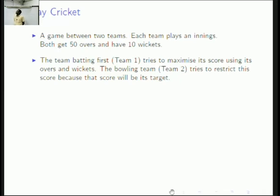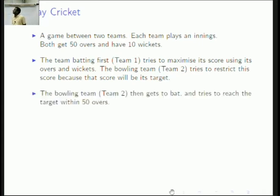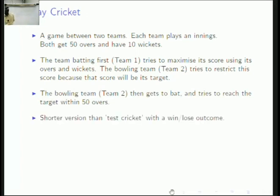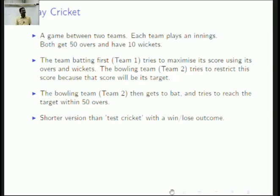So let's call that team two — it tries to restrict the score because this will be its target during its innings. The bowling team then gets to bat and tries to reach the target within 50 overs. This is a shorter version than test cricket, and the good thing is that it almost always has a win or lose outcome, though occasionally there are ties. But we will study the 50-over format.